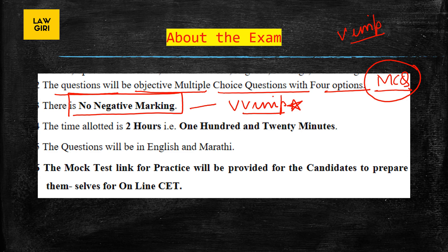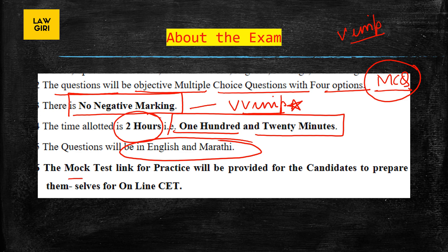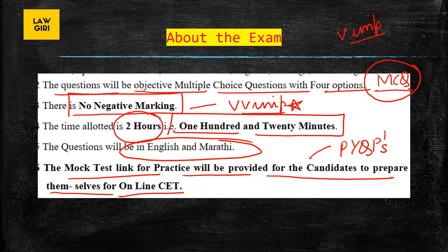The time allotted is two hours and twenty minutes, which is quite generous. Questions will be in English and Marathi. A mock test link for practice will be provided for candidates. Previous year question papers of Maharashtra CET are not available, so do solve the mock tests to see how prepared you are and which topics you still need to cover.